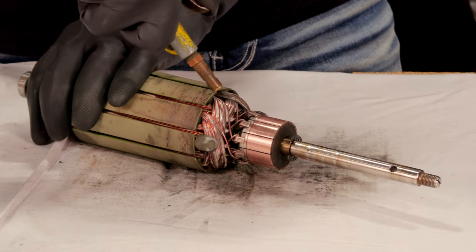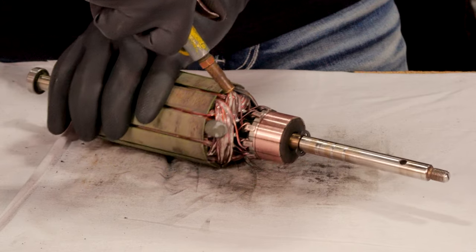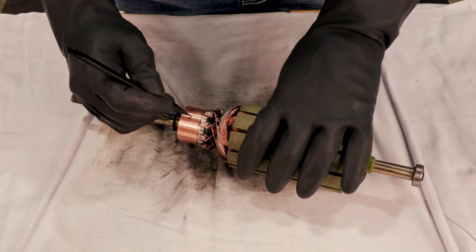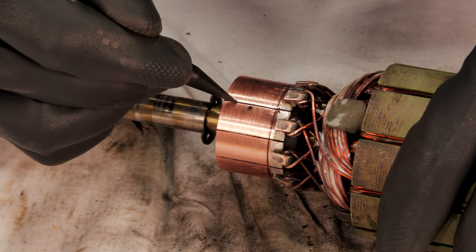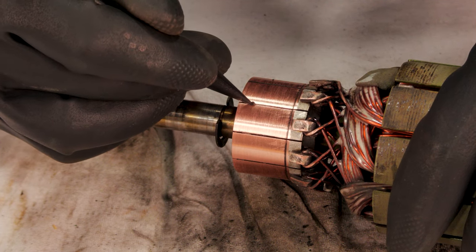After the sanding is done, you can blow away any debris using an air hose. Next, you can clean in between the commutator bars using a plastic scriber. This will remove any buildup that was left from resurfacing.